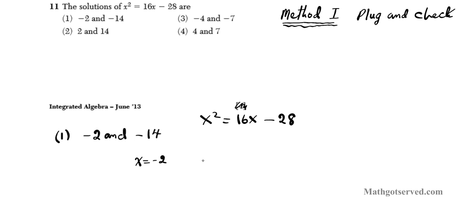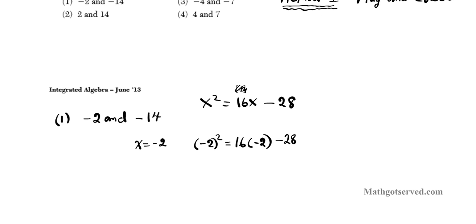So the question is, is negative 2 squared equals 16 times negative 2 minus 28? Is that true or false? If I square this, I get 4 because negative times negative is positive. Multiply this together, I get negative 32 minus 28. The question is, 4 equals negative 60? The answer is no. So this is wrong, that automatically tells me that option 1 is not a solution.